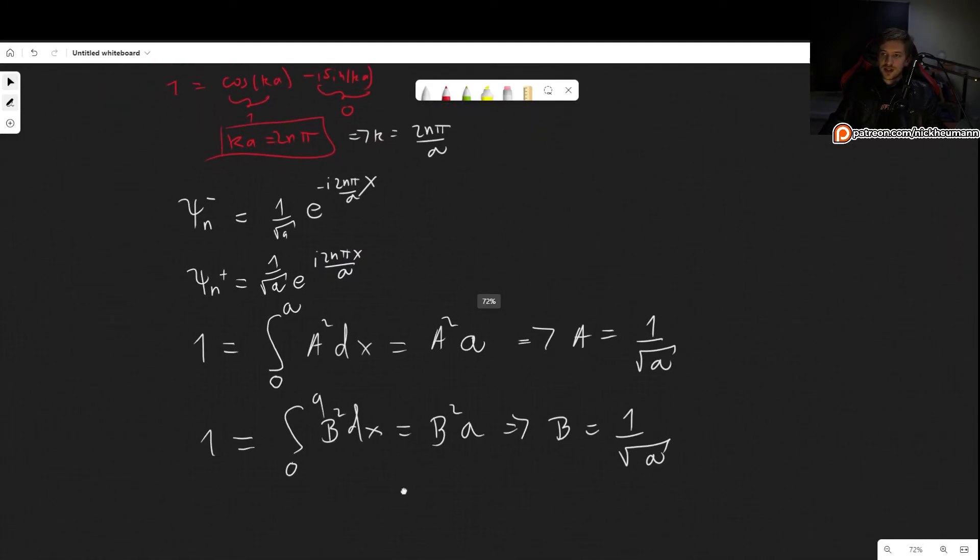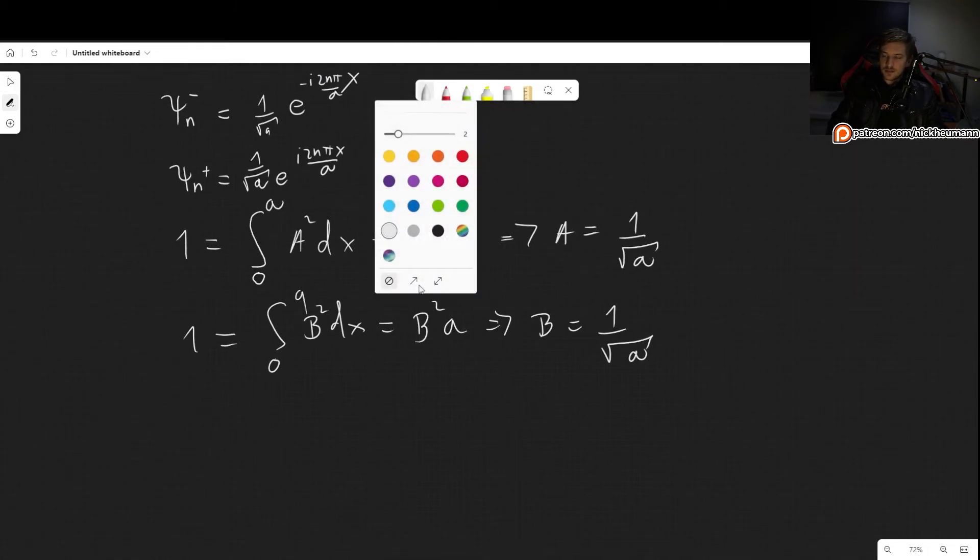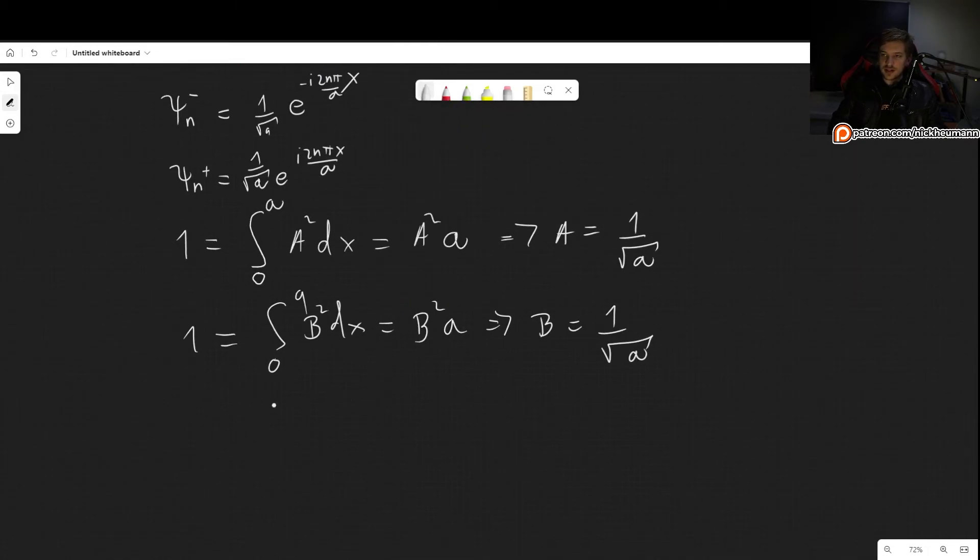Now, how do we find the energy? There's a few ways to go about it. I would say that perhaps one of the quickest ways to find it is simply to take two derivatives. So we know that -ℏ²/(2m) d²ψ/dx² equals Eψ.